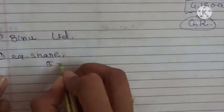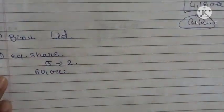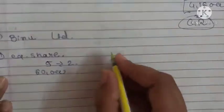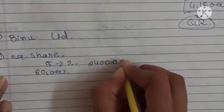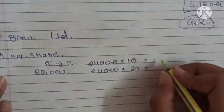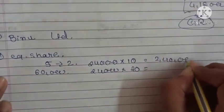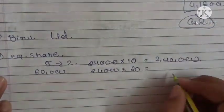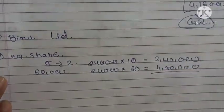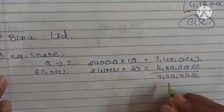Now let's do Binu Ltd's calculation. For Binu Ltd, equity shares first. The ratio is: whoever has 5 equity shares gets 2 equity shares. Actual shares are 60,000. So total: 60,000 × 2 ÷ 5 = 24,000 shares. 24,000 × ₹10 (face value) and 24,000 × ₹20 (premium). Total equity amount for Binu: ₹7,20,000.